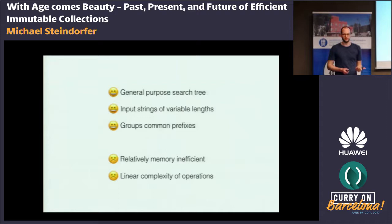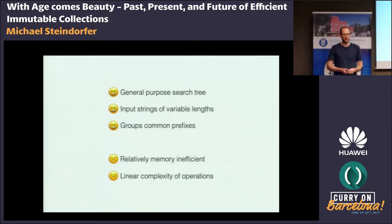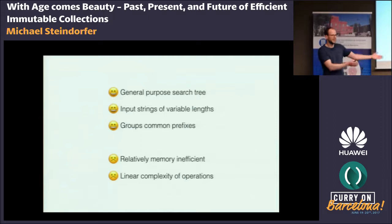To summarize the properties of Trie data structures: on the positive side, it's a general-purpose search tree that can cope with variable-length input strings, and by design, Trie data structures share common prefixes. What's not so good about them is that they are relatively memory inefficient, at least in the form conceived in the late 1950s. Also, because we encode character by character in the tree, lookup, insertion, and deletion all take linear time.